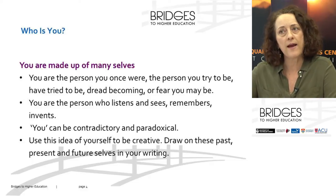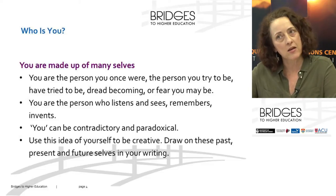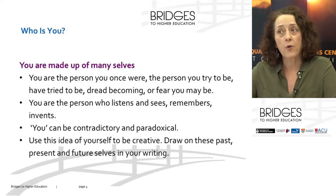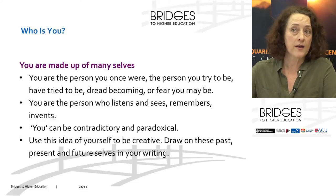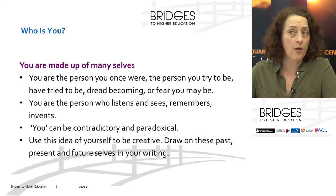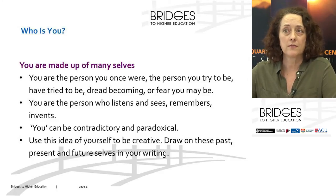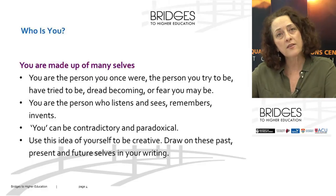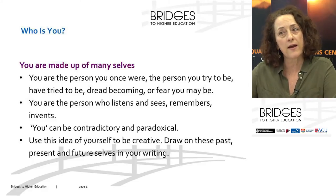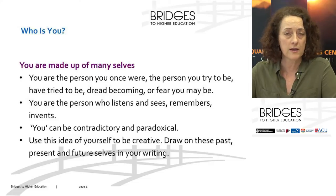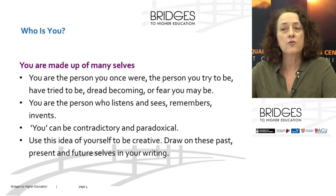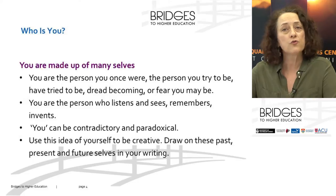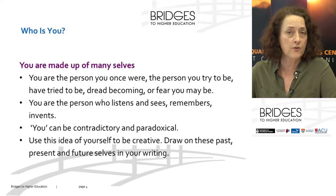One way to think about it is to think of yourself as being made up of many selves. You're the person you once were, the person you try to be, the person you dread becoming or fear that you might be. You're a person who listens, sees, remembers, invents. That idea of yourself can be contradictory and paradoxical, which is exactly what you need for writing. You can draw on all these different selves — your past, present, and future ideas of yourself — to get ideas for your writing.